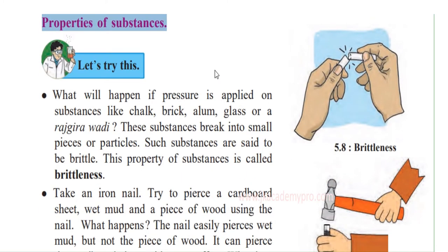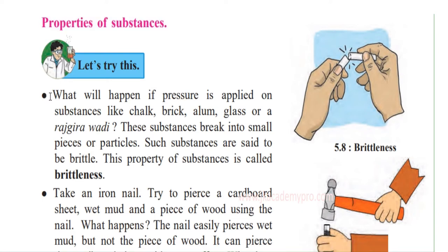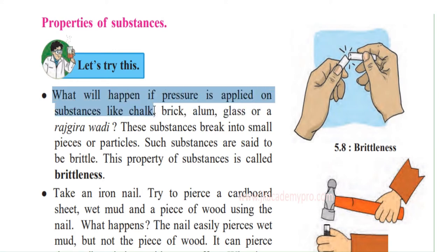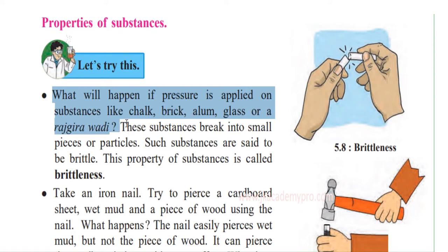Now let's do some little experiments and activities to find out the properties of substances. First, what will happen if pressure is applied on a substance like chalk, brick, alum, glass, or a rajgira vadi? Rajgira is a grain-like substance from which chikki or vadi are made.